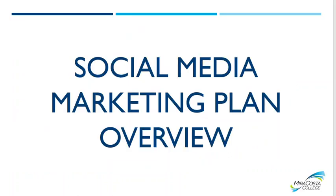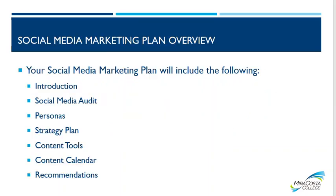Social Media Marketing Plan overview — this is the main project for the semester, and you should be adding to it every week as you learn more in the lectures so you're not doing it all at once at the end of the semester. The social media marketing plan will include: an introduction, a social media audit, personas, a strategy plan, content tools, a content calendar — that's mostly Hootsuite, so those of you who have done the Hootsuite certificate know all about content calendars — and recommendations. All the exact information is in Canvas and has been published for a couple of weeks now.